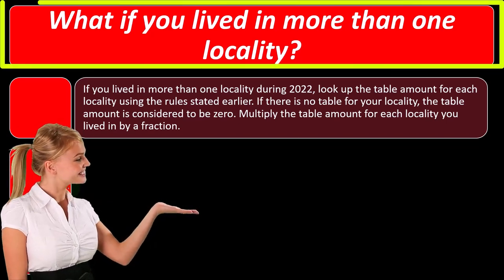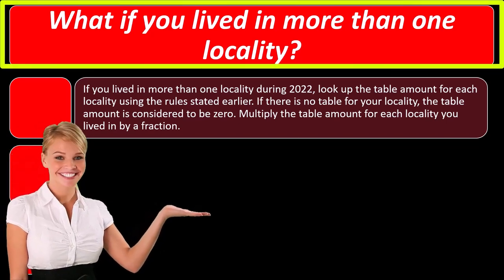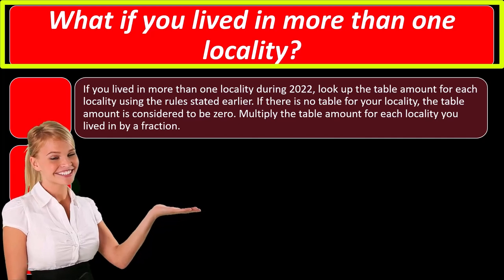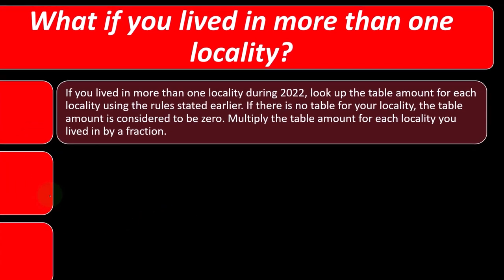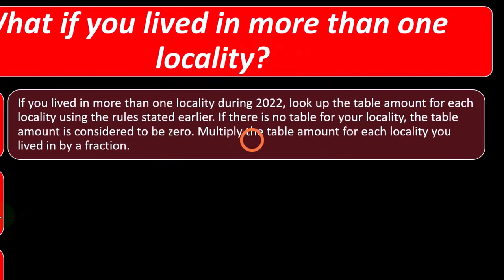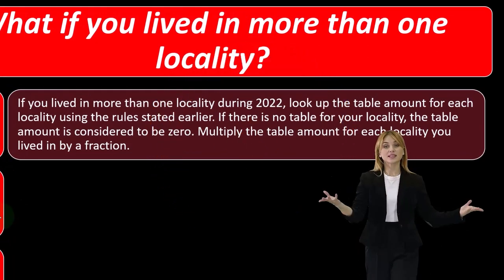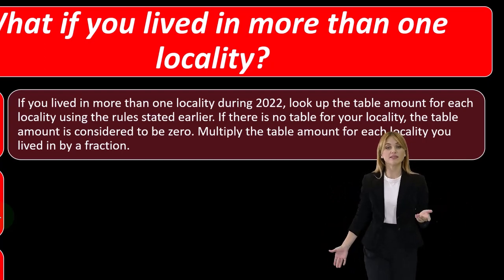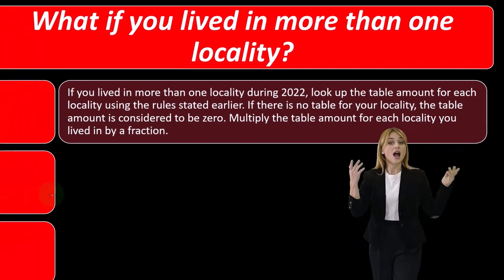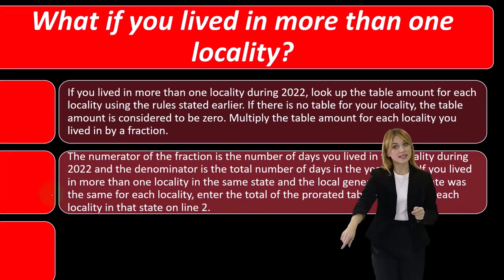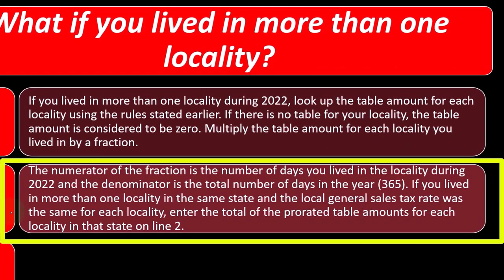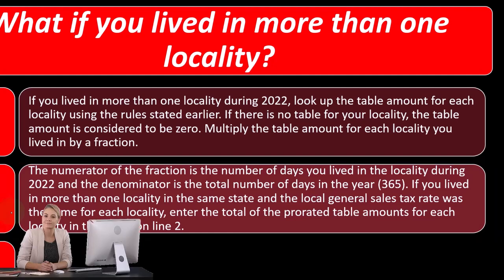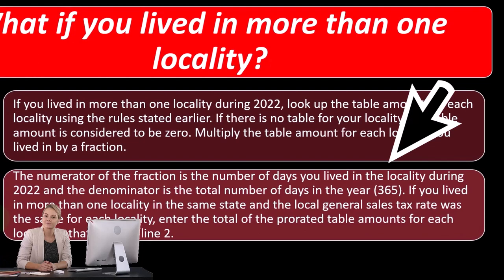What if you lived in more than one locality? If you lived in more than one locality during 2022, look up the table amount for each locality using the rules stated earlier. If there is no table for your locality, the table amount is considered to be zero. Multiply the table amount for each locality you lived in by a fraction. The numerator is the number of days you lived in the locality during 2022, and the denominator is the total number of days in the year, 365.